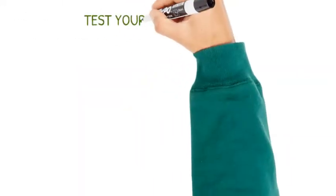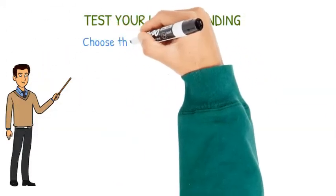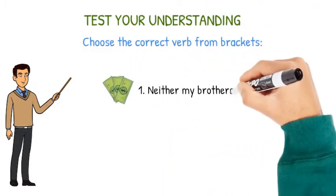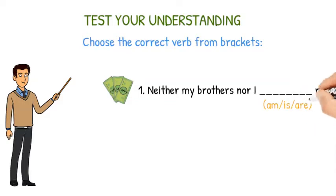Test your understanding. Choose the correct verb from brackets. Neither my brothers nor I am rich.